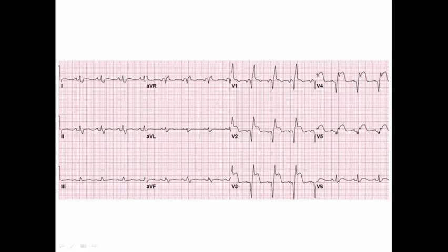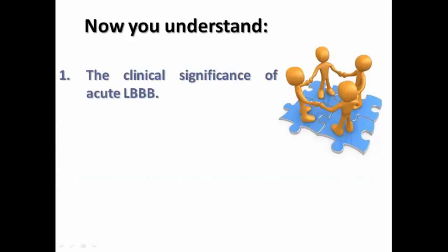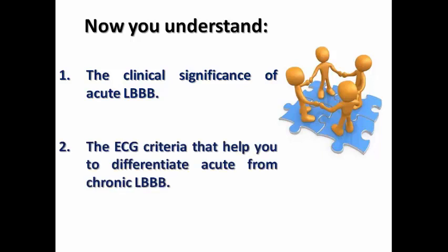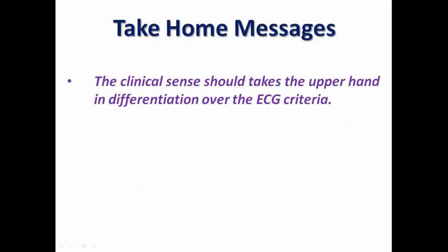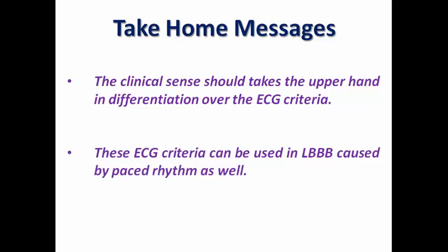In another example, we can see ST-elevation in V1-V4 and V5, extensive anterior STEMI with formation of pathological Q waves, but also a prominent R wave suggestive of right bundle branch block morphology. This patient has extensive anterior STEMI with acute right bundle branch block — a very high-risk sign requiring a rush to the cath lab. In summary today, we understood the clinical significance of acute left bundle branch block, the ECG criteria to differentiate acute from chronic LBBB, and our take-home message is that clinical sense should take the upper hand over ECG criteria, while these ECG criteria also apply to paced rhythm.